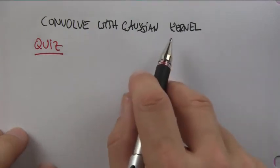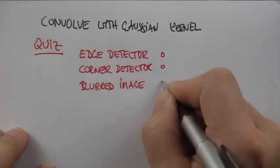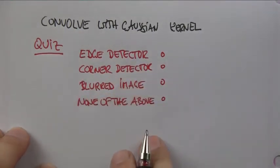If we convolve an image with a Gaussian kernel, what do we get? An edge detector, a corner detector, a blurred image, or none of the above?